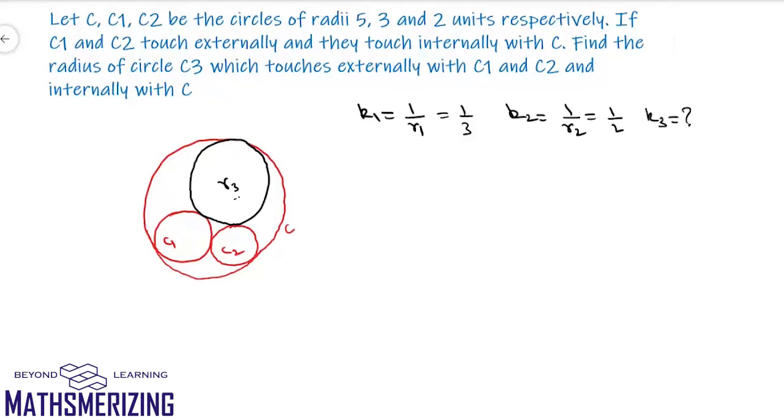Now k3 is the curvature of the circle that we have to find. The curvature of this outer circle is k4. Because this circle touches them internally, it will be negative, so it will be minus 1 upon r, which will be minus 1 by 5.